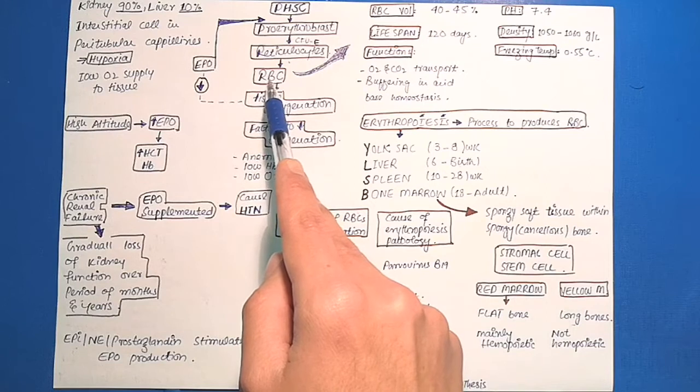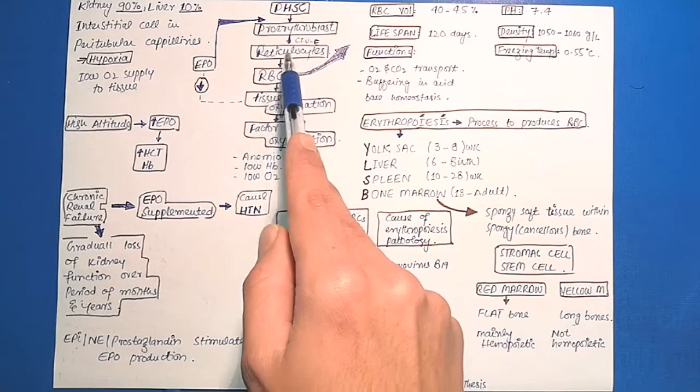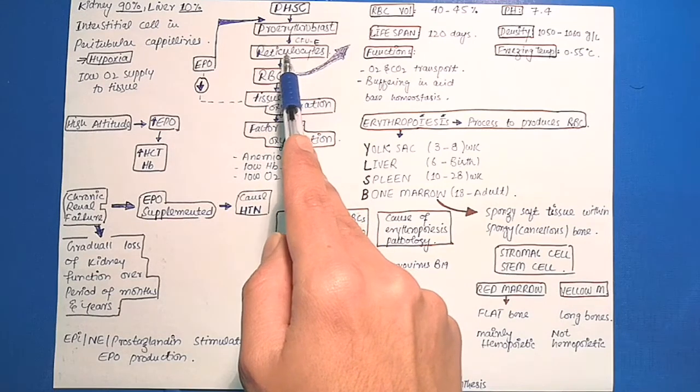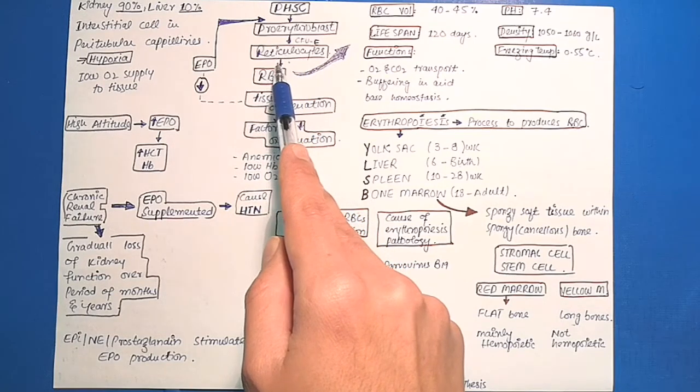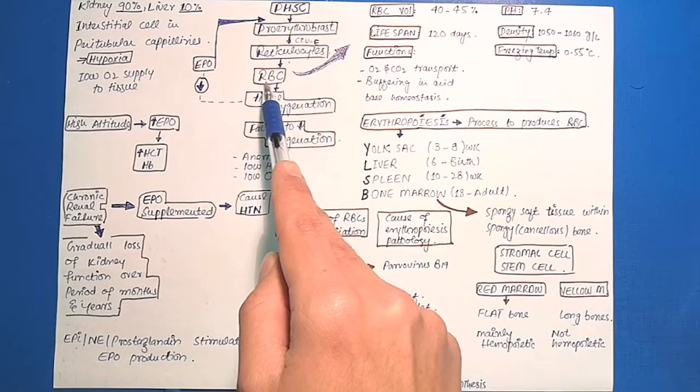In blood, the basophilic material disappears within one or two days because of the short life of reticulocytes. Now the red blood cell transports oxygen to the tissue.